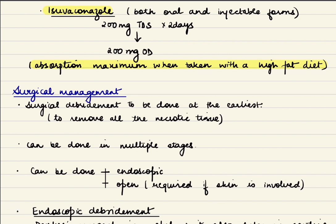Similarly, isavuconazole is available in both oral and injectable forms. The loading dose is 200 mg three times a day for 2 days, followed by 200 mg once daily. To increase absorption, take it with a high-fat diet.